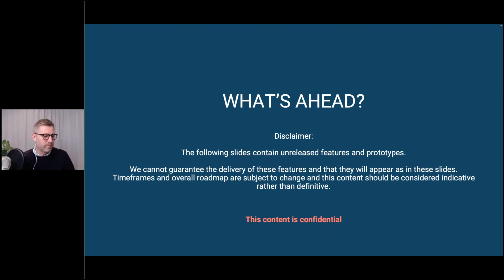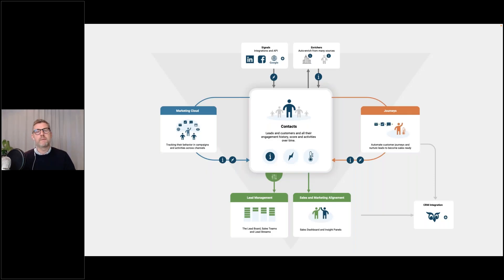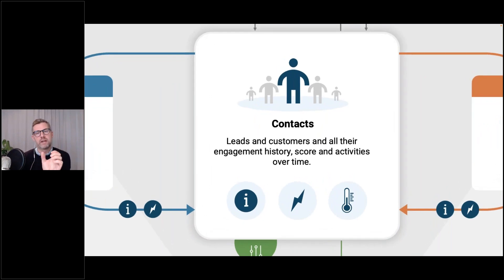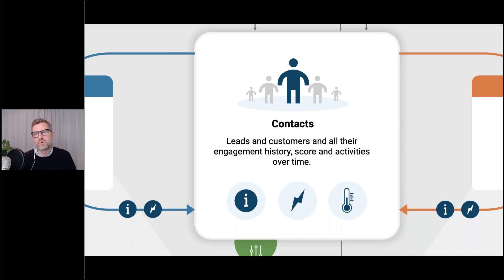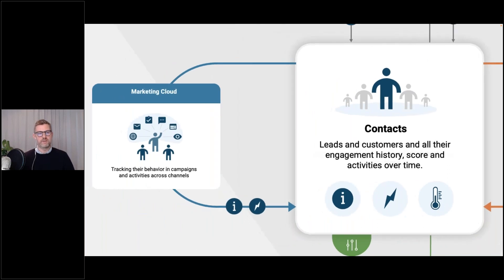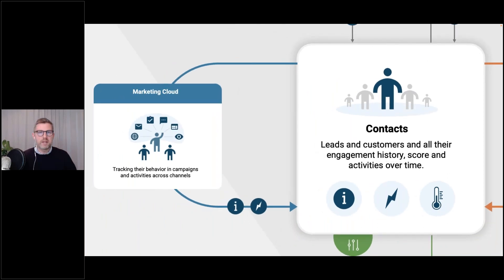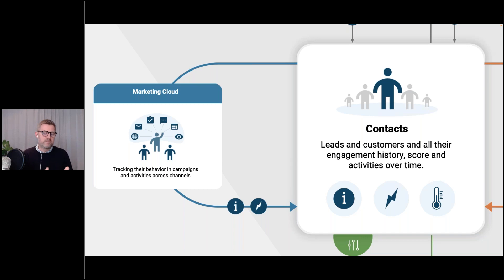Let's look ahead at what we're working on now and what we'll be bringing to eMarketeer later this year, hopefully before summer. Here's a big picture of how we see eMarketeer and how all these things tie together. At the very central focal point are people — leads we're trying to win over or customers we're trying to keep around longer — and all the context of their engagement history, profile information, and scoring. To deliver that value into SuperOffice we have the marketing cloud: email, landing pages, SMS, forms, mobile apps — all the tools you know in eMarketeer to nurture leads and make customers become ambassadors.